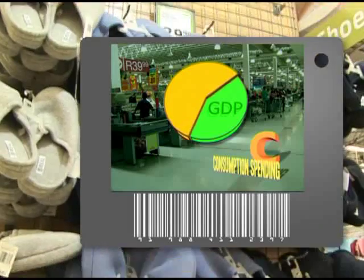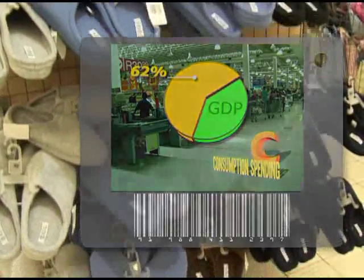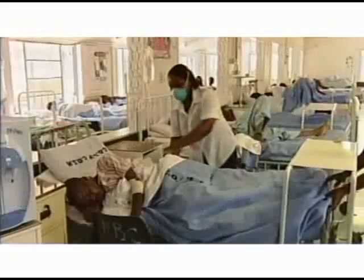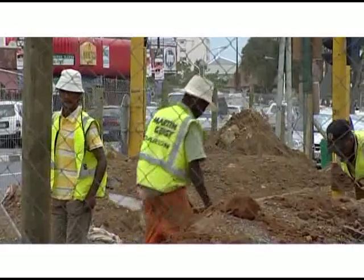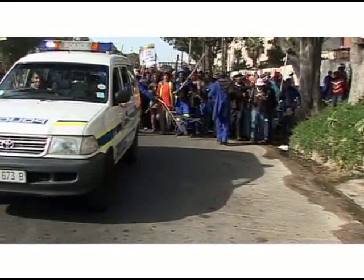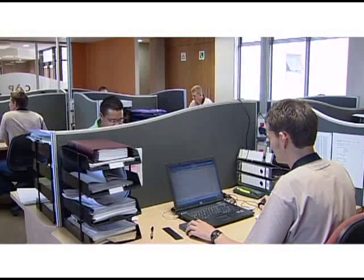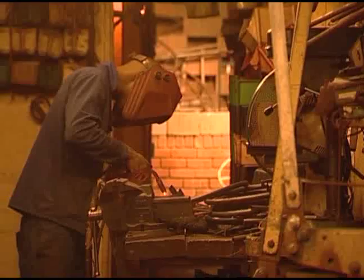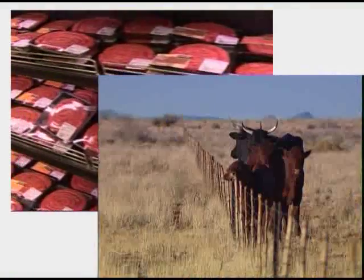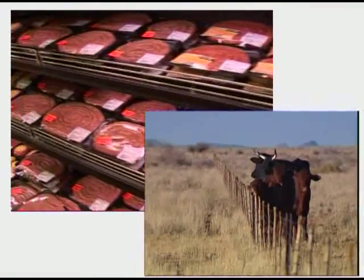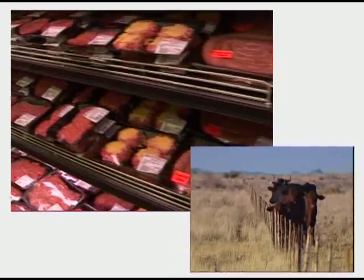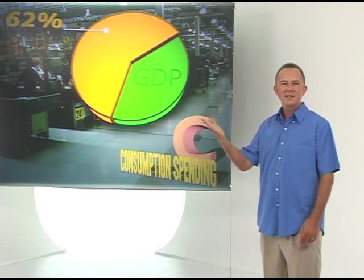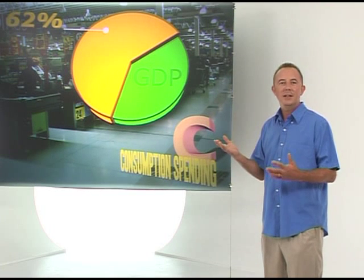Here in South Africa, households are responsible for approximately 62 percent of all spending in the country. Think about all the other spending that goes on — government spending on roads, hospitals, education, salaries, municipal services, the army, the police — and what businesses spend on buildings, equipment, even whole other companies. But together, all this other spending only adds up to 38 percent.